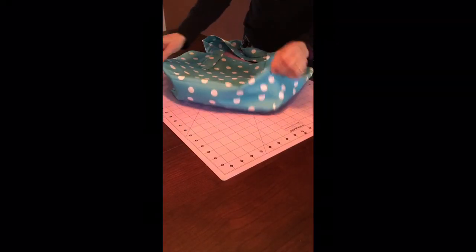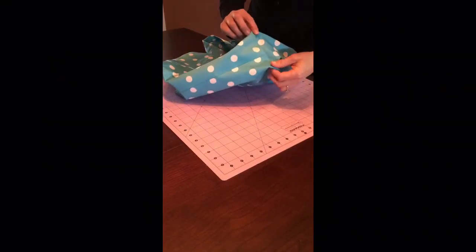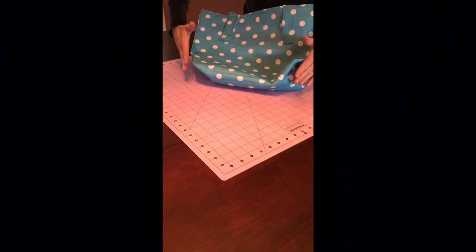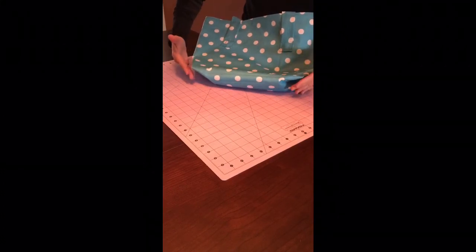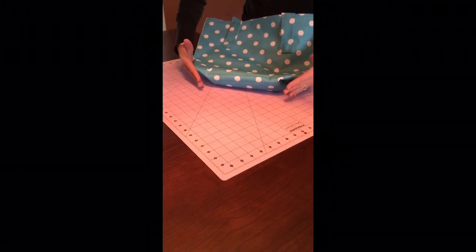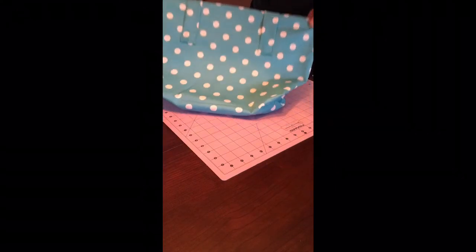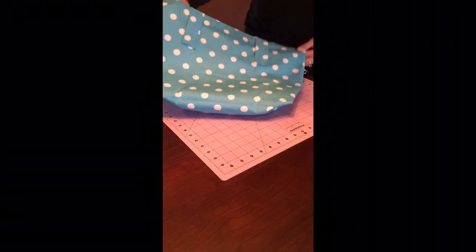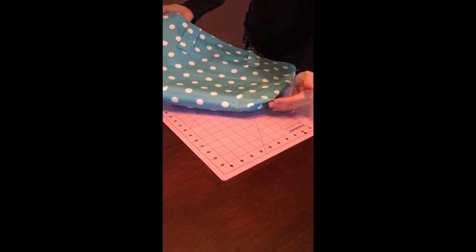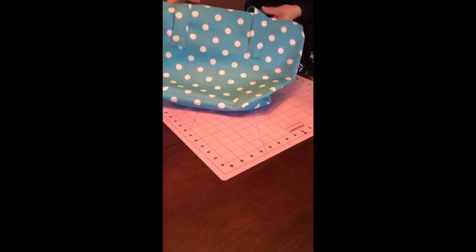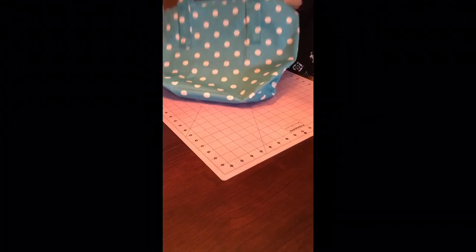Another thing to keep in mind with these box bottoms is that the wider you make them, the more exaggerated the shape of the bag is going to be. Doing these box corners is going to make the bottom of the bag narrower than the top. Which is fine. I think that's a really cute look. It almost looks like a garden-y type look. But just keep in mind that the wider you make those box bottom seams, the more dramatic that angle is going to be between the bottom of the bag and the top.